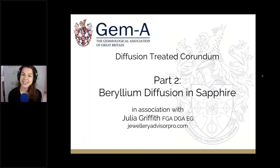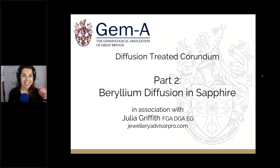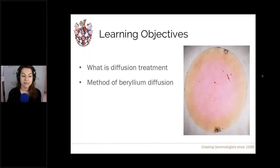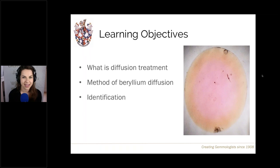We're going to be talking about beryllium diffusion in sapphires, leading on from last week's session where we discussed titanium diffusion. In this session, covering the learning objectives, we're going to discuss what diffusion treatment is, the method of how we diffuse beryllium into corundum, the effects of this treatment, and how we can identify it.